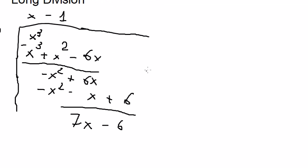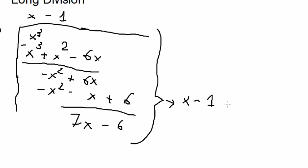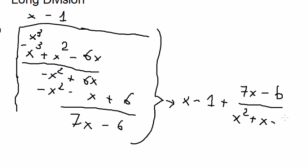Now you will get the result: x minus 1 plus 7x minus 6 over x squared plus x minus 6.